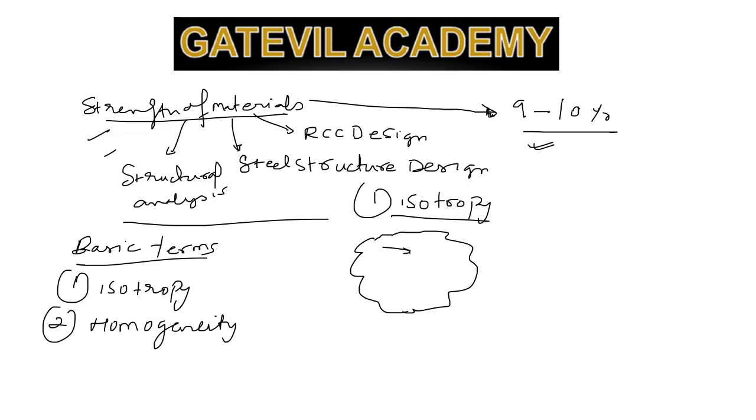It has EX, which is the modulus of elasticity in the X direction, EY in the Y direction, and EZ in the Z direction. If a material is isotropic, then EX should equal EY should equal EZ.